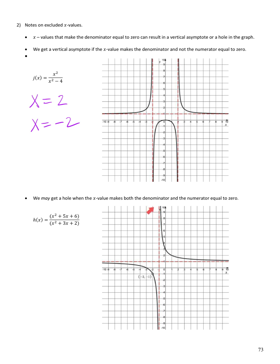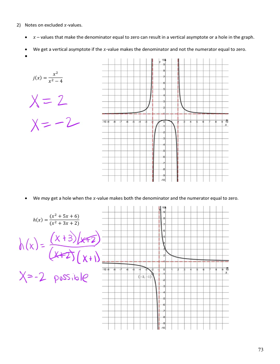You may get a hole when the x value makes both the denominator and the numerator equal to 0. For h(x), the numerator factors to (x+3)(x+2) and the denominator to (x+2)(x+1). The (x+2) factors cancel, so x = -2 is a possible hole. And x = -1 makes only the denominator 0, giving a vertical asymptote. So we get the vertical asymptote at x = -1 and a hole at x = -2.